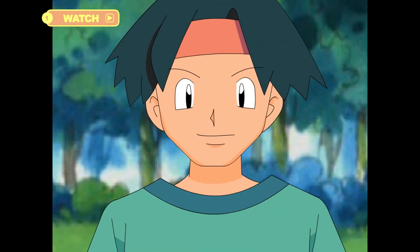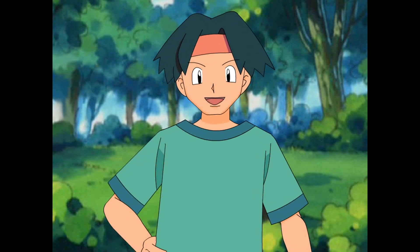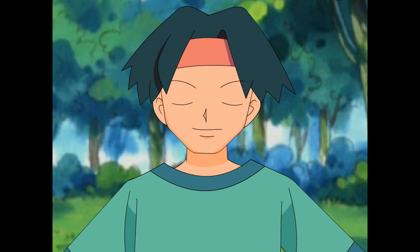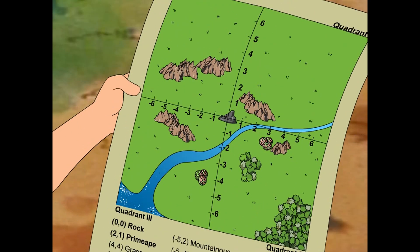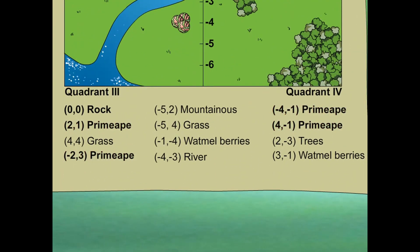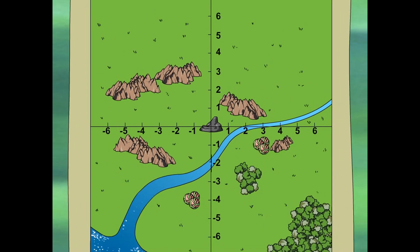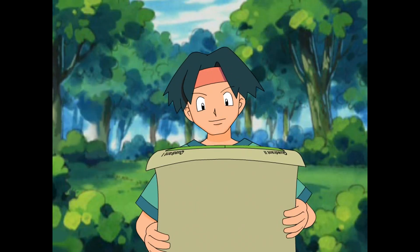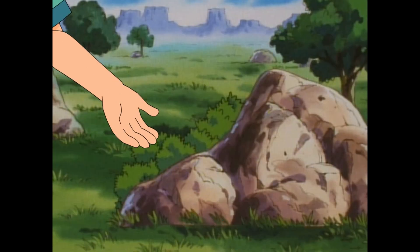Shh! Be very quiet. We don't want to disturb the wild prime ape. The number of prime ape in this area has increased tremendously in the past few years, so Professor Oak has asked me to help him. I have to scope out their habitat area and note any other Pokémon I see. He gave me this coordinate grid. He said it's like a map. Professor Oak wrote some notes: avoid the points marked prime ape on the map. When you spot other Pokémon, mark them on the map. This looks like a typical map. The origin must be where I start, which looks like this rock.